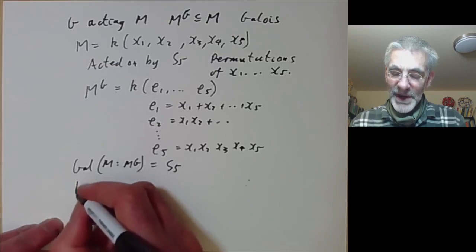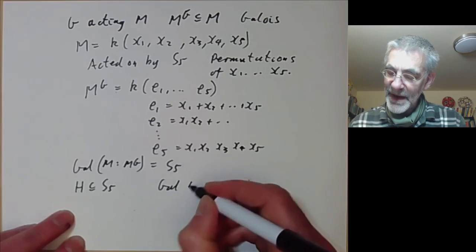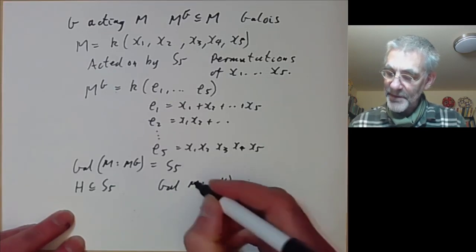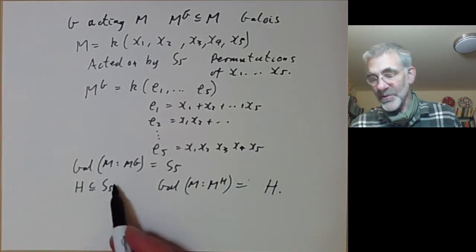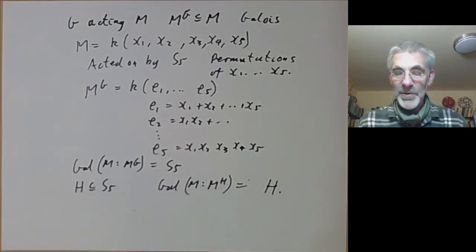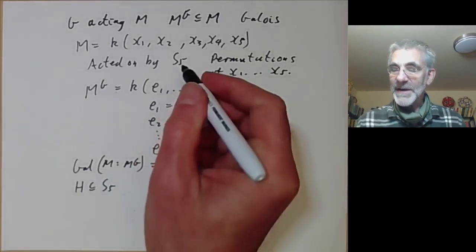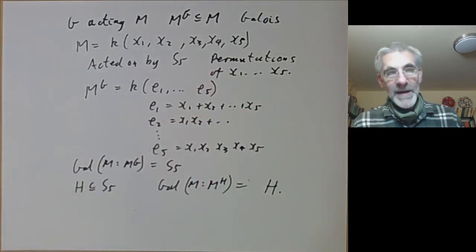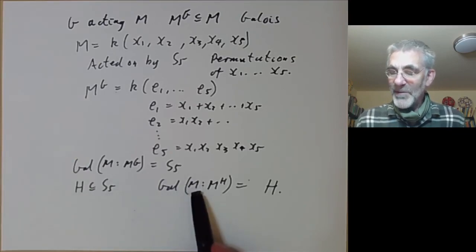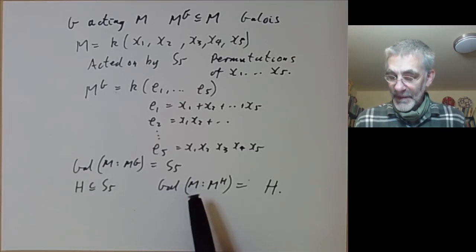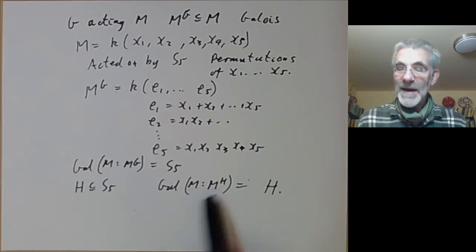More generally, for any subgroup H of S₅, the Galois group of M over M^H is exactly H. And there's nothing special about five — you can do this with any symmetric group. By Cayley's theorem every finite group embeds in some symmetric group, so for any finite group we can find some Galois extension with that group as its Galois group.